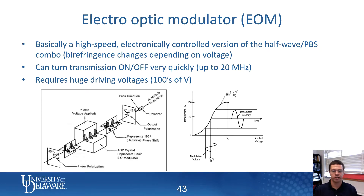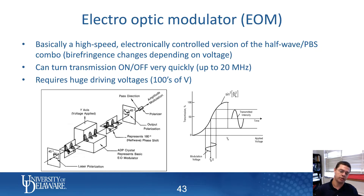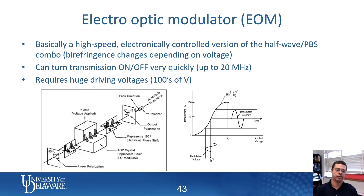In time-domain thermoreflectance, what the EOM essentially does is turn the transmission of a laser on and off very quickly. Depending on how these things are designed, it's typical to get performance of up to about 20 to 30 megahertz switching speed for the electro-optic modulator's transmission.